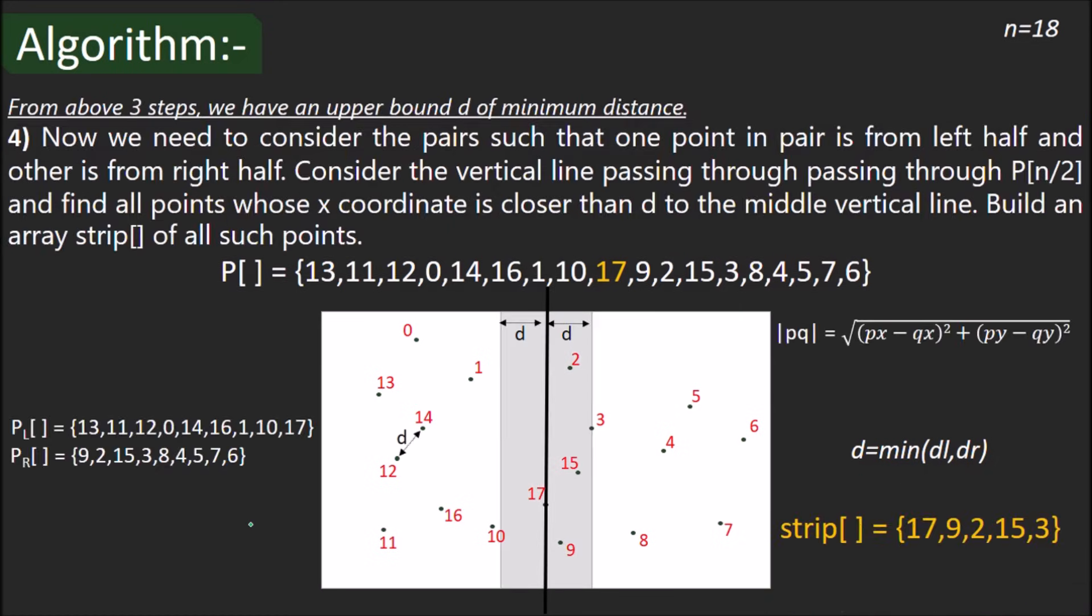For that, we have our step 4. Consider the vertical line passing through the midpoint P[n/2]. Find all the points whose x coordinate is closer than d to this line on either side. We need to find only the distances between these points because distances between any other points other than those in this 2d strip would be greater than d. Hence, we add the points in the 2d strip to a new array strip. In this example, only the points 17, 9, 2, 15 and 3 belong to this array strip.